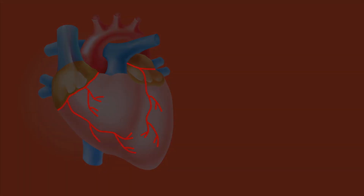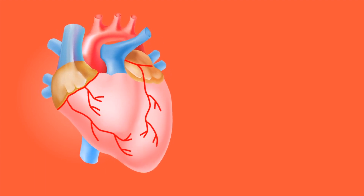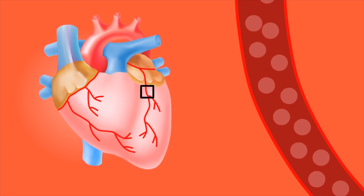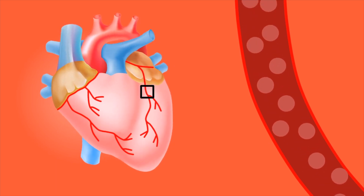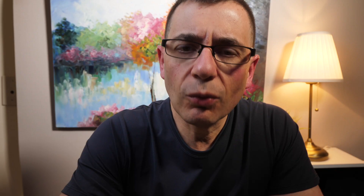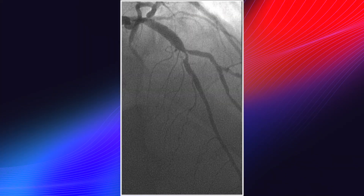These arteries that branch may develop plaque and cholesterol at the level of the branch point, and when that occurs, we call that a bifurcation lesion. And here are some examples — we can see an example here of a branch point where a narrowing has developed at the level of the branch point.